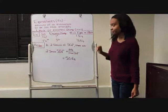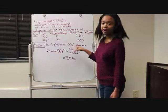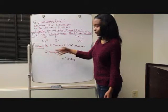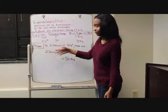The problem states: in 2.5 moles of SO₄²⁻, how many equivalents are there? To solve this, you multiply 2.5 by 2 equivalents and divide by 1 mole.